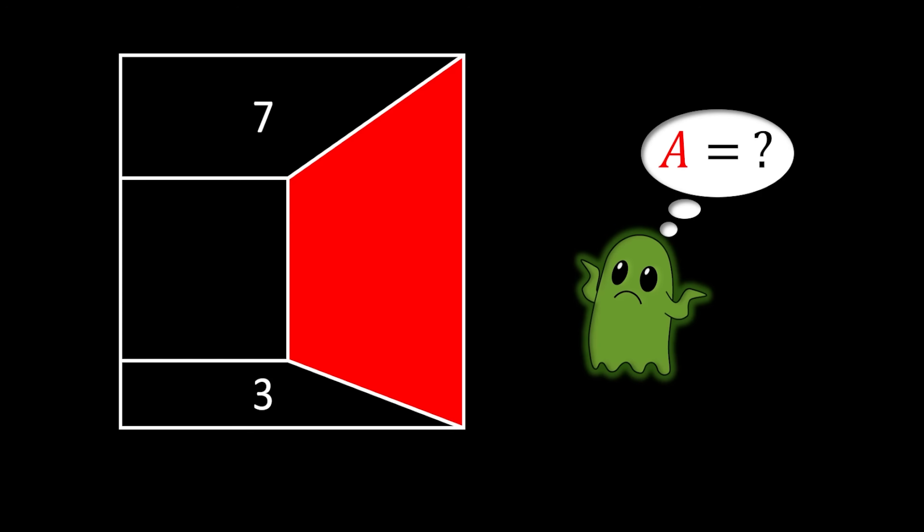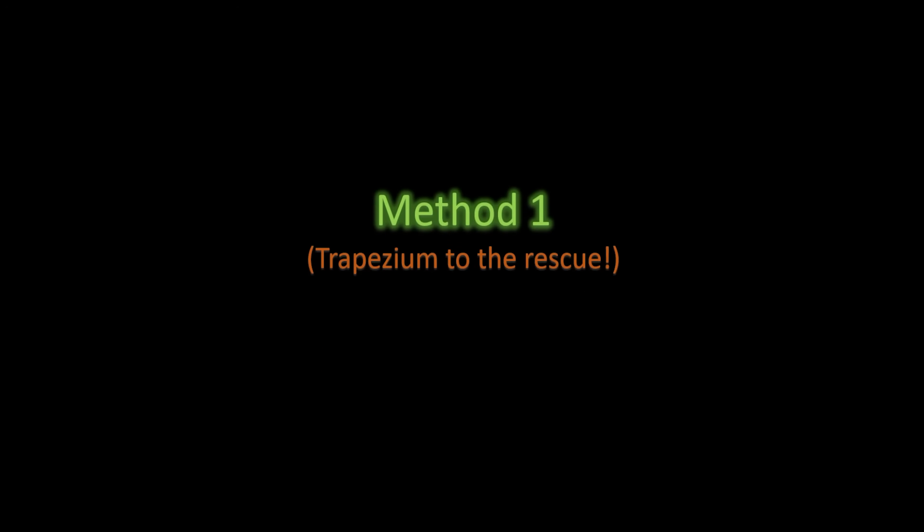All right, so let's solve this one. I'm going to offer you two different methods to solve this problem. The first method will use the trapezium. We're going to start by labeling the red area as A.